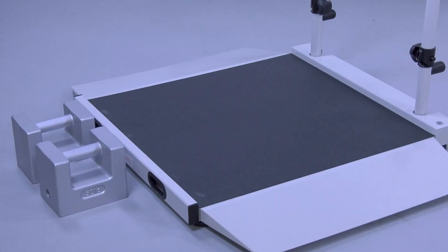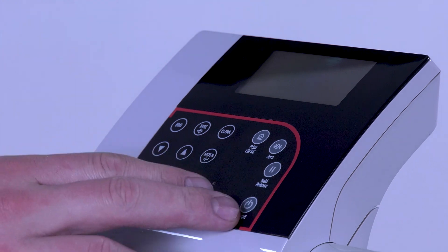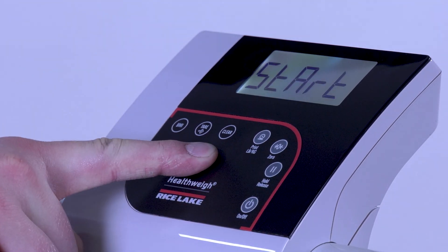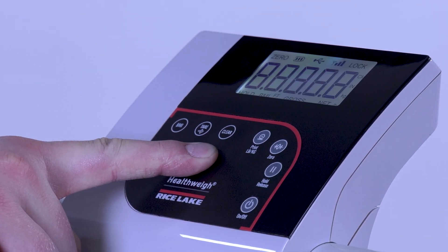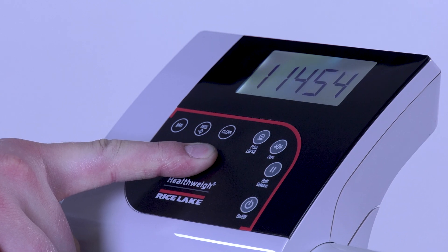Once you have your certified calibration weights ready, power on your scale by pressing and releasing the on-off key. Then, press the Enter key and hold until the screen displays ID and the firmware version.